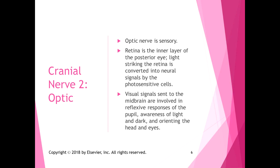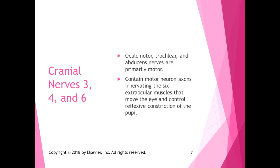Cranial nerve two is the optic nerve. It is a sensory nerve — the vision sense. The retina is the inner layer of the posterior eye. Light striking the retina is encoded and converted into neural signals by photosensitive cells. Visual signals sent to the midbrain are involved in reflexive responses of the pupil, awareness of light and dark, and orienting the head and eyes.